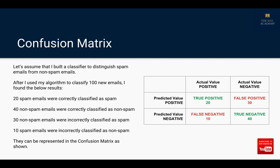After I do that, in my results I find that 20 spam emails were correctly classified as spam and 40 non-spam emails were correctly classified as non-spam. Those two are my true positive and my true negative — where the actual value was spam and my classifier also predicted it to be spam, that is my true positive of 20. And my true negative is where the actual value was not spam and my predicted value was also not spam, with 40 such emails. So my true positive and true negative are populated accordingly in this table.